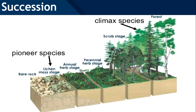When succession occurs where a community previously existed, it is called secondary succession. Remember from previous grades: primary succession is a succession which starts with almost a barren land, a piece of rock where there is no life.